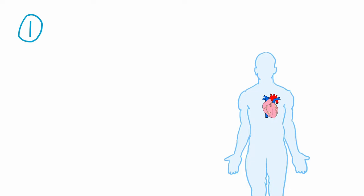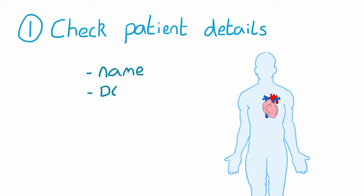The first step to interpreting any ECG is checking patient details using three pieces of identification. Missing this step in exams could result in you getting zero marks.